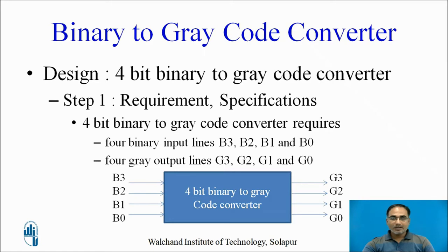Let us today learn the 4-bit binary to gray code converter. The first step in any design is the requirement and specifications. A 4-bit binary code converter requires 4 binary inputs b3, b2, b1, b0 and 4 gray outputs g3, g2, g1, g0.